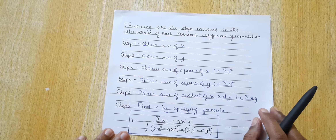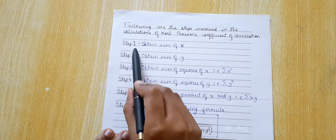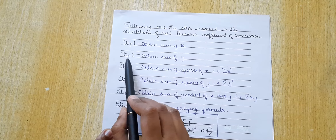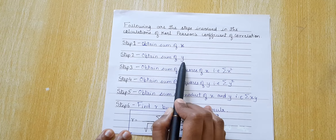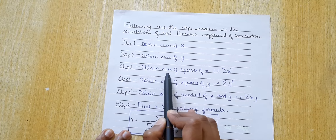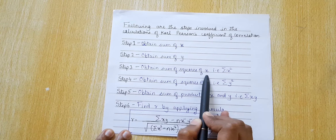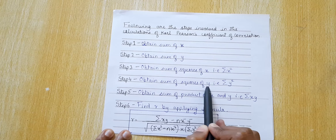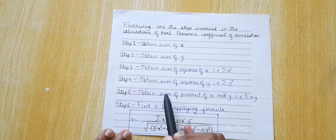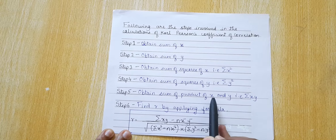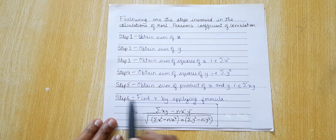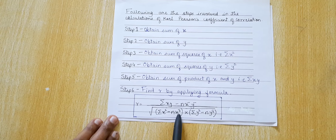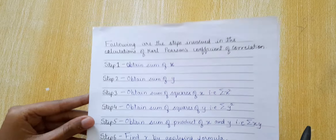Now there are six steps to calculate Karl Pearson. Step 1: obtain sum of x. Step 2: obtain sum of y. Step 3: find sum of squares of x. Step 4: obtain sum of squares of y. Step 5: obtain sum of product of x and y. And finally, step 6: find Karl Pearson by applying the formula.